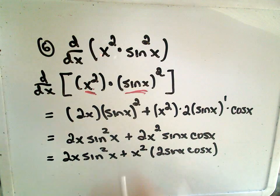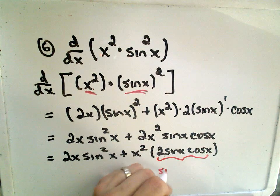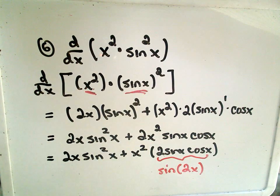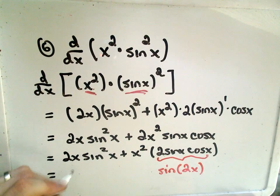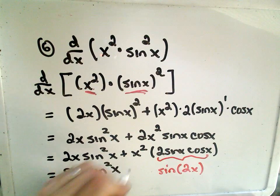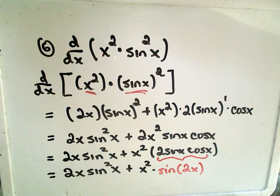Remember, there's a trig identity for 2 sine x cosine x, and it says that that is simply sine of 2x. And this is, in fact, one of their answers. So they write it as 2x sine squared x plus x squared times sine of 2x.